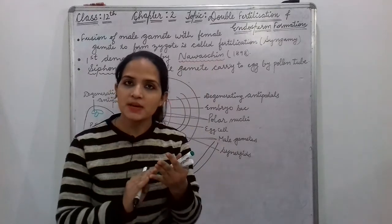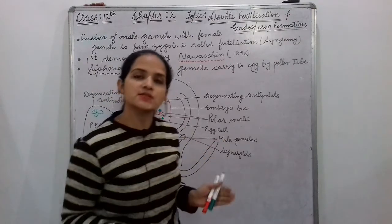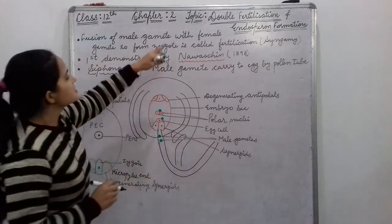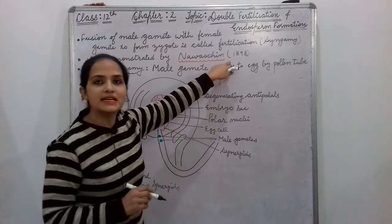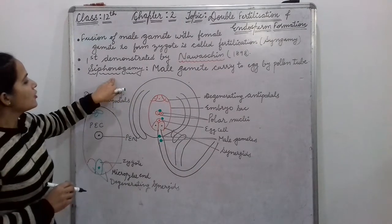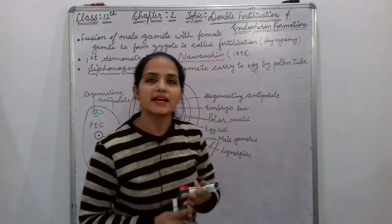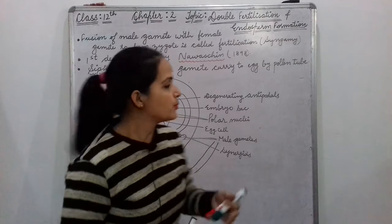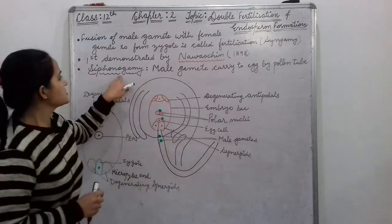So when the male gamete fuses with the female gamete, that step is syngamy, and the whole process is known as fertilization. This double fertilization was first demonstrated by a scientist in 1898. Now, what is siphonogamy? We know that the male gamete is carried to the female gamete by the pollen tube. The pollen tube carries two male gametes, and this process is known as siphonogamy — the male gamete comes to the female gamete with the help of a siphon, a tube.